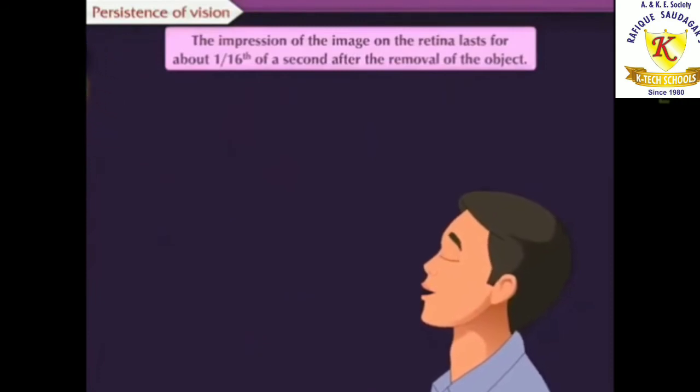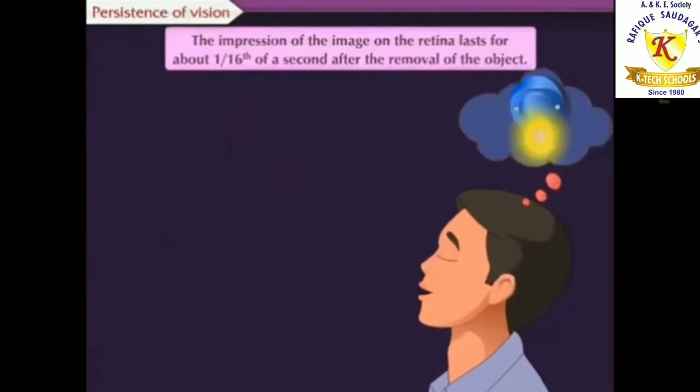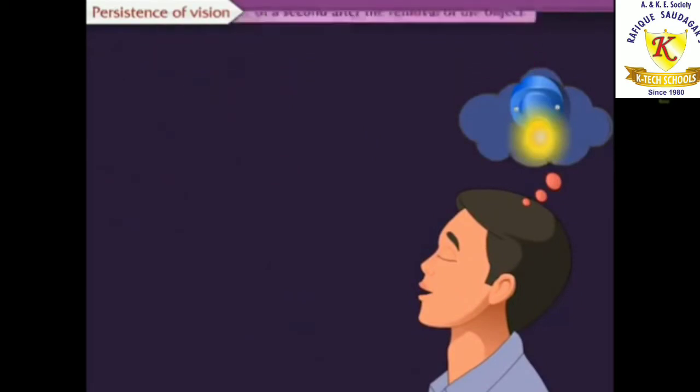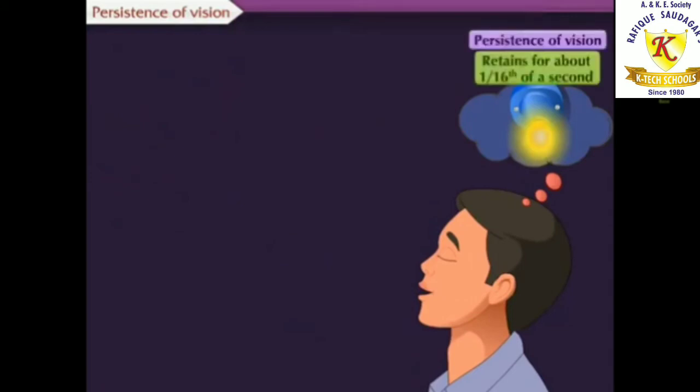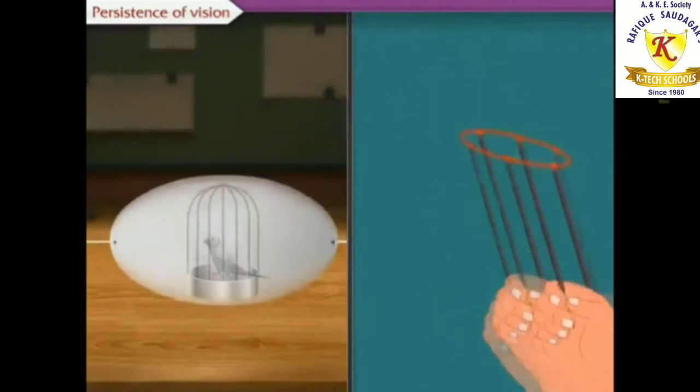The impression of the image on the retina lasts for about 1/16th of a second after the removal of the object. This is called the persistence of vision.